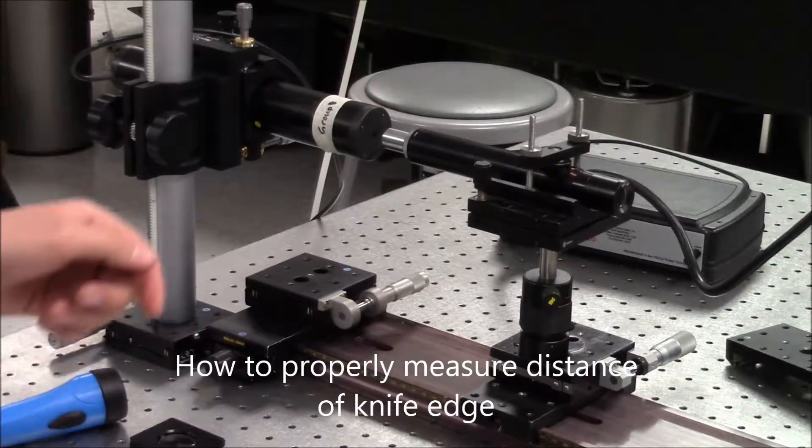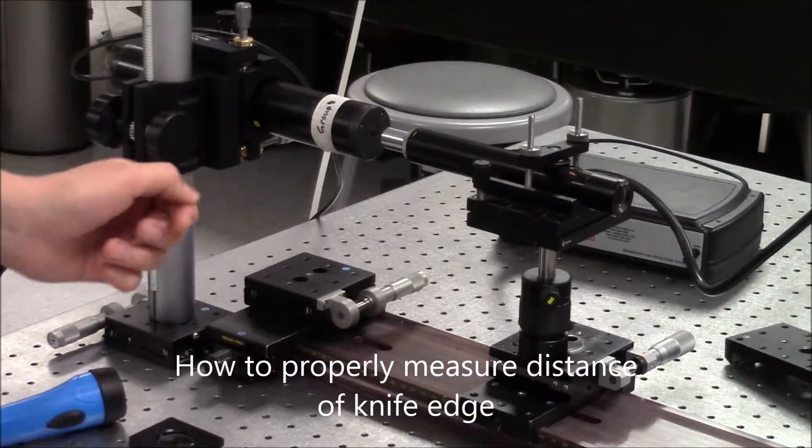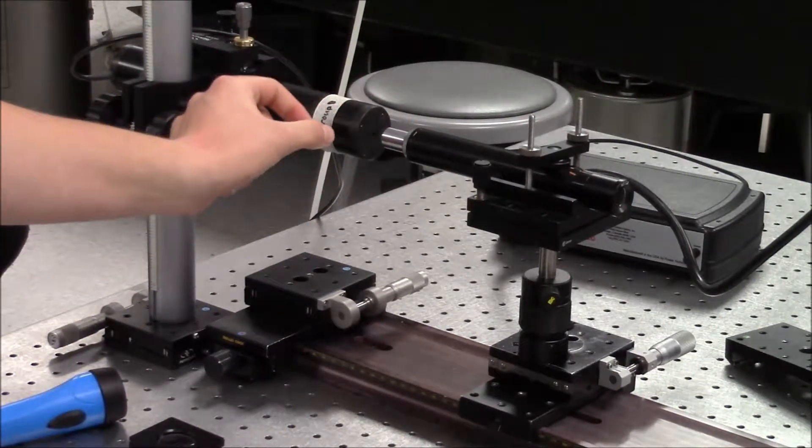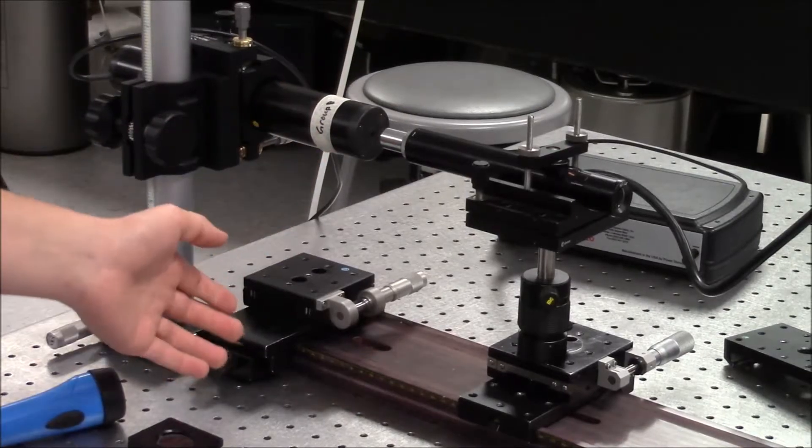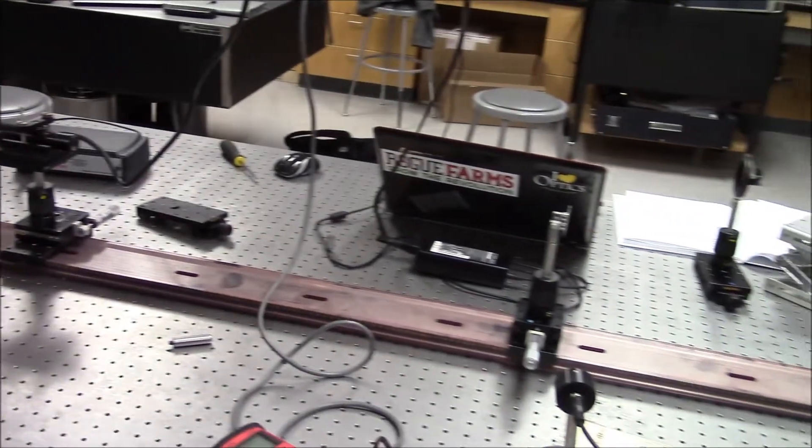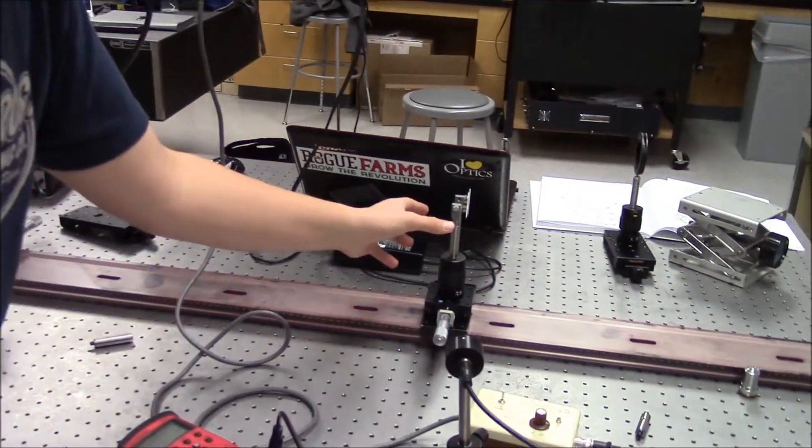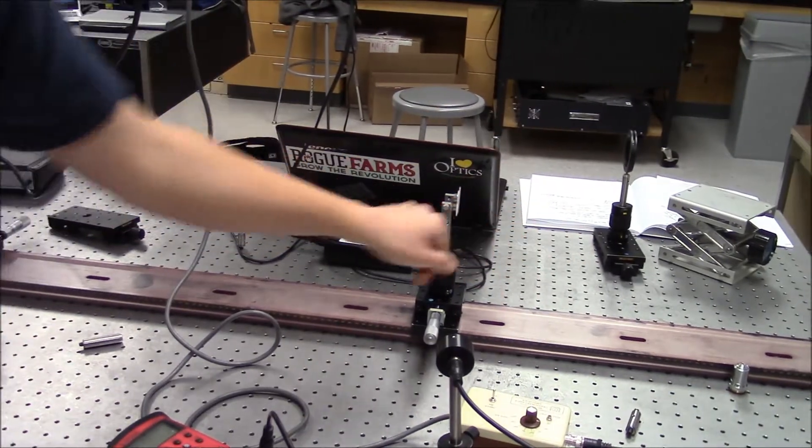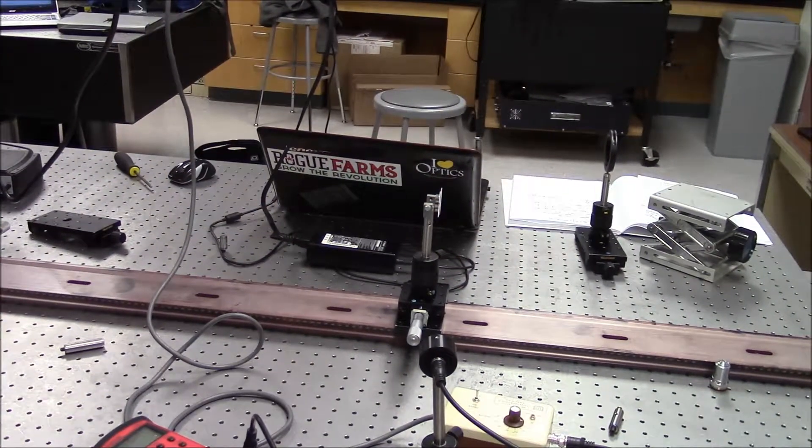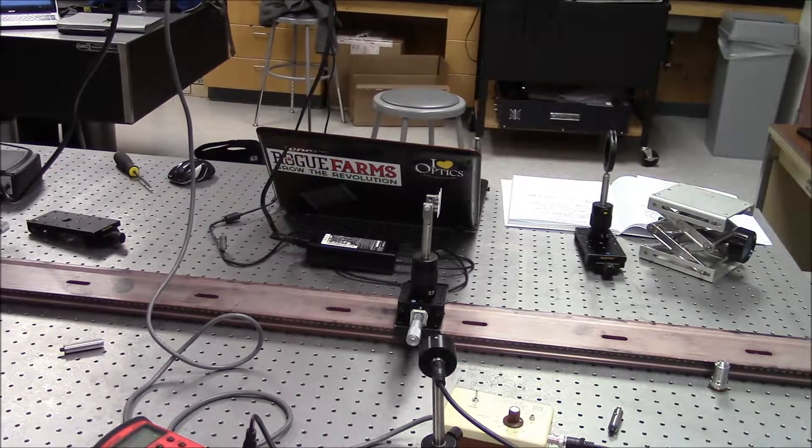We focused the microscope right here on the very edge of the laser and used that as the set working distance. And from that, we moved the microscope back one meter, so it was a meter plus the working distance away. And from there, we placed the knife in front of the microscope right there, so that we knew that the knife was one meter away from the laser after we focused the mirror on the knife.